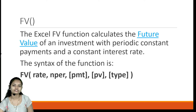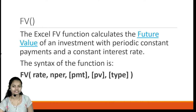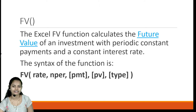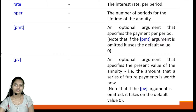The first function is FV — the Future Value function. This FV function calculates the future value of an investment with periodic constant payments and a constant interest rate. The syntax for the function is FV, and in the bracket we need to specify the parameters necessary for calculating the future value: rate, nper, PMT, PV, and type.